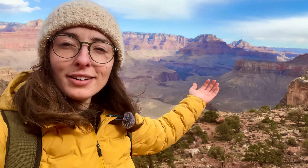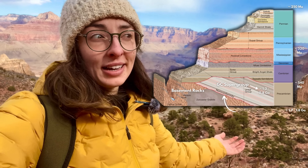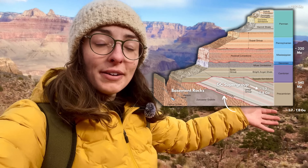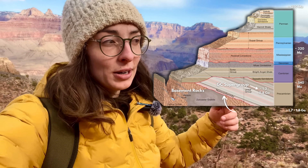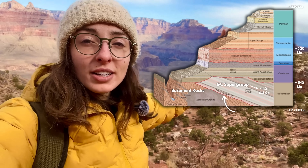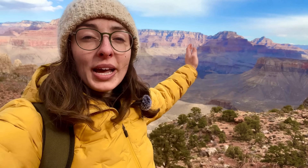Keep in mind, this unconformity did not erase all the rocks from that missing time period. We actually have some in the Grand Canyon itself — the Grand Canyon Supergroup from the Proterozoic, dating from around 1.2 to 0.8 billion years ago. However, the Grand Canyon Supergroup is not preserved everywhere in the canyon, so where it isn't preserved, we have this boundary that we call the Great Unconformity.